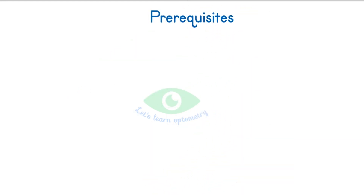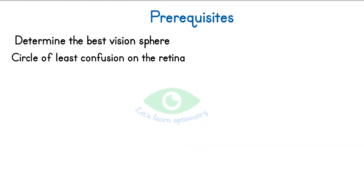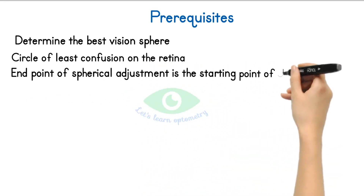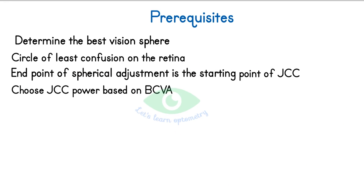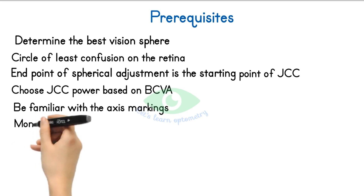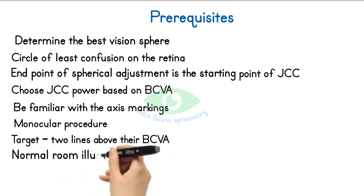Prerequisites: Before beginning the procedure, we would have already found the best vision sphere during a subjective refraction. The circle of least confusion must be on the retina before starting JCC. Choose JCC power based on the patient's best corrected visual acuity — refer to our previous video for this. Be familiar with the axis markings of the JCC you are using. It is a monocular procedure, so the non-tested eye is occluded. The target given is two lines better than the best corrected visual acuity. The test is carried out in normal room illumination.